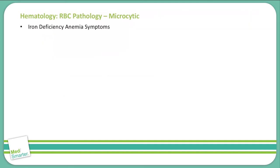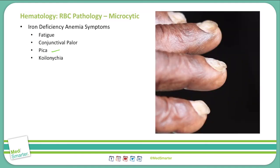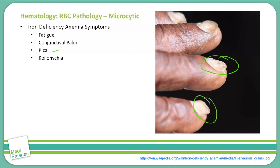The symptoms for iron deficiency anemia include fatigue. Conjunctival pallor — that is the skin around the eyes — will be pale. Pica is a craving or compulsive eating of certain foods or non-food items, often discussed with psychiatric disorders. Koilonychia is a spooning of the nails and nail beds, as you can see here — the nails have a spoon shape to them. We also see glossitis, which is a bald or shiny appearance of the tongue with a loss of color.